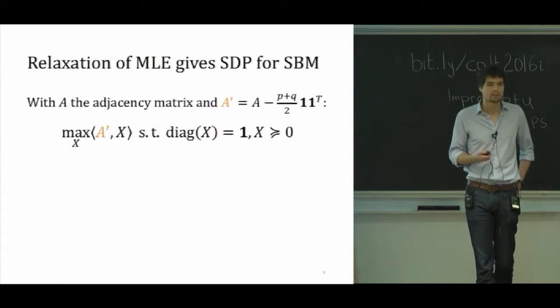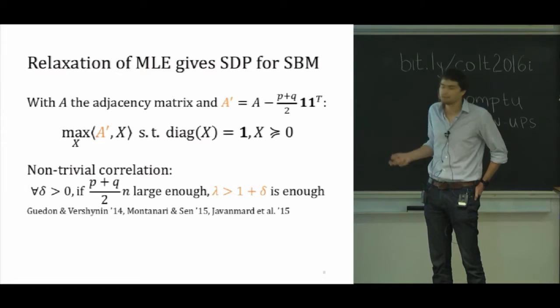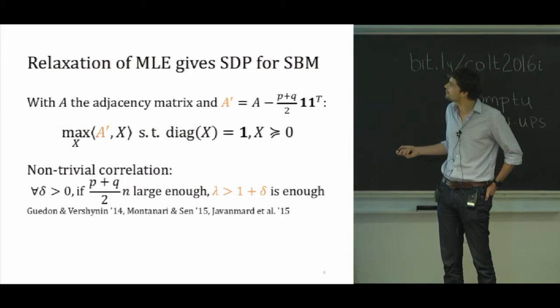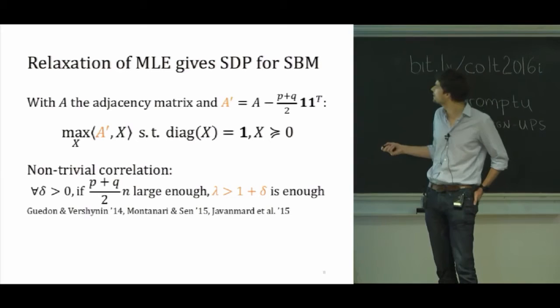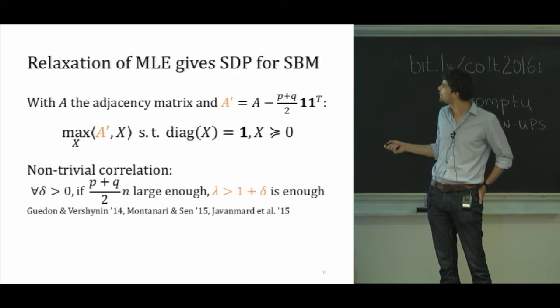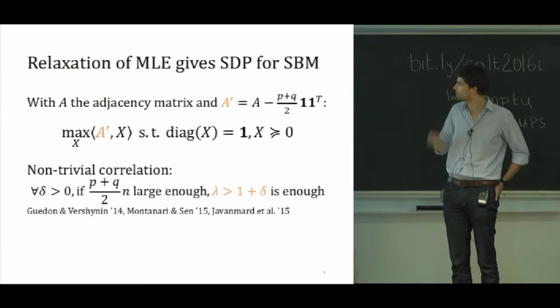Now what is known about the semi-definite program? What do we know about its solution with respect to the statistical problem that we're looking at? We know that if we're looking at the constant average degree regime, the first regime that I talked about, provided you consider P plus Q over 2 times N, which is the average degree of the nodes to be big enough, you can get away with making lambda bigger than 1 plus some delta. And you can make delta as small as you want if you make this large enough. And what I mean by lambda bigger than this is enough is that if you solve this semi-definite program, then there's a way of transforming the matrix X into an estimator that does better than random in terms of estimating the partitions.